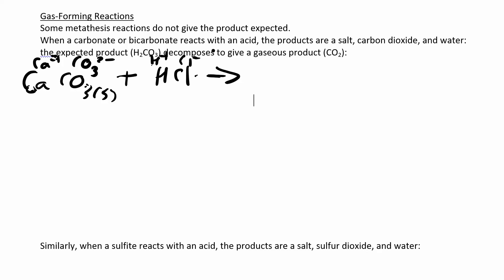And now if we just did a regular double replacement reaction, we'd have calcium on this side, H plus over here, right? And then they'd switch places. The anions would switch places. I have chloride and then I'd have CO3 2 minus. So when you crisscross applesauce, you get CaCl2 and H2CO3 carbonate ion.